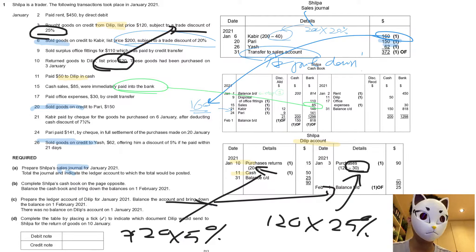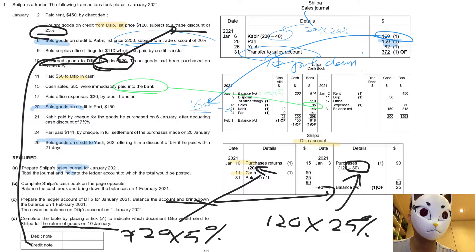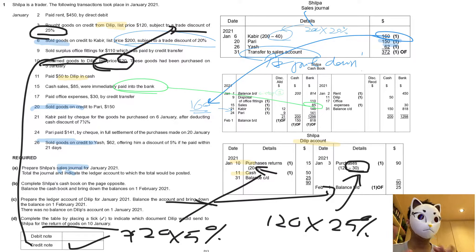For Part D, it's about the return on date 10 — returning goods. This is the credit note.